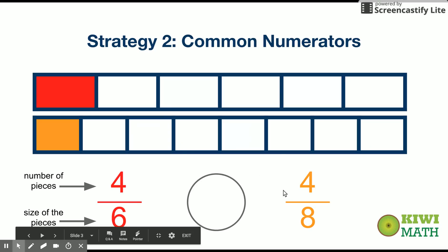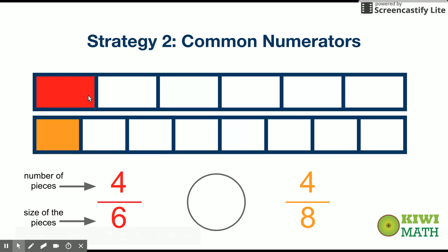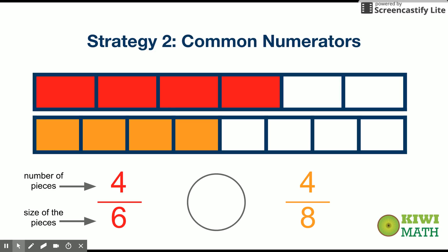If you have a greater denominator, each piece is going to be smaller. So if we know that one piece that's a sixth is greater than one piece that's an eighth, then if we have four pieces of each, you could clearly see that four-sixths is greater than four-eighths. The number of pieces we have is the same, so what's different is the size of the pieces, and the fraction with the smaller denominator gives us the bigger size pieces — and therefore that's the greater fraction.